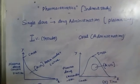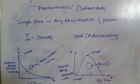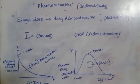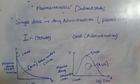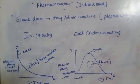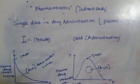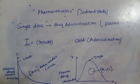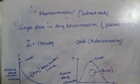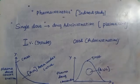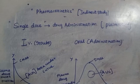Hello, here we are discussing the topic of pharmacokinetics, specifically bioavailability studies. Bioavailability studies are of two types: direct and indirect. Pharmacokinetics and pharmacodynamics are the two types of bioavailability studies, where pharmacokinetics is considered the indirect study.